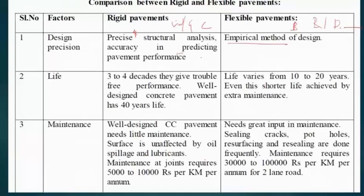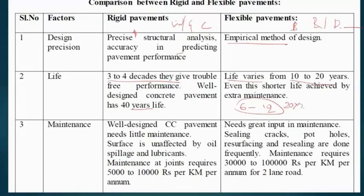In rigid pavement, precautions must be taken during design and construction so it will last its design life of 40 to 50 years. The design life of rigid pavement is very high — almost two to three times that of flexible pavement. Flexible pavement has a shorter design life of 6 to 12 years, or up to 20 years for some national highways. Present-day research predicts rigid pavement design life up to 50 years.